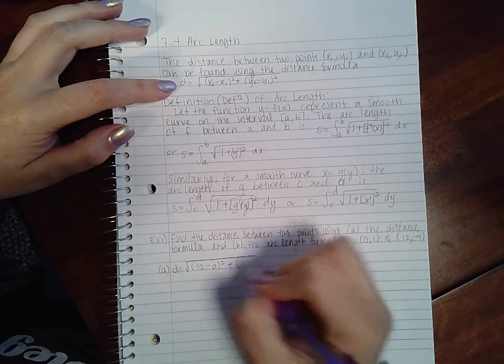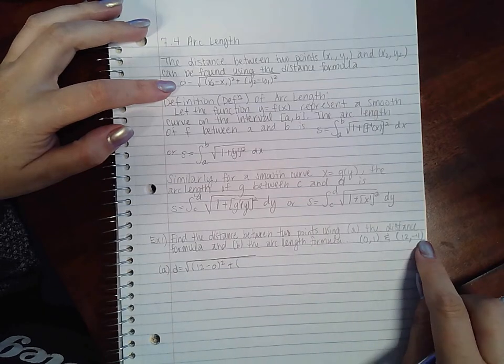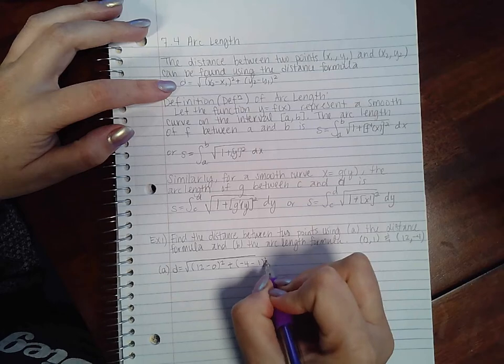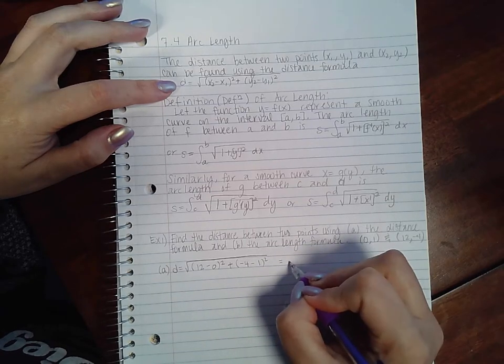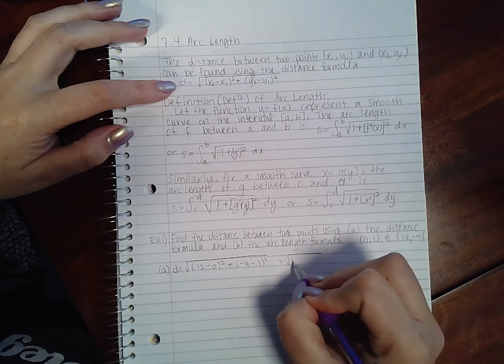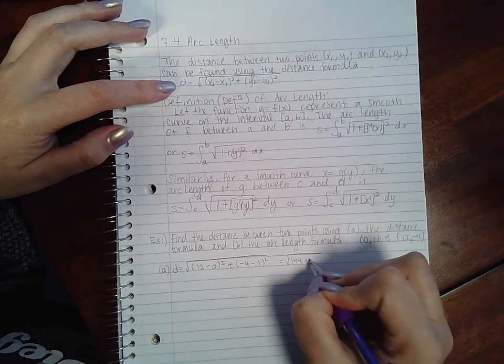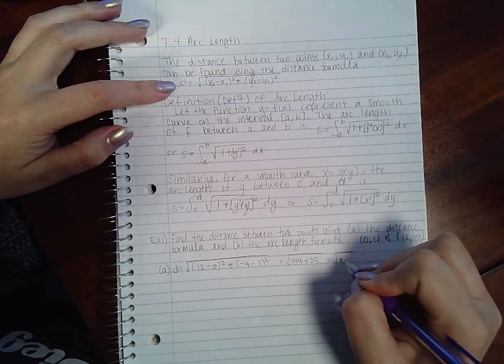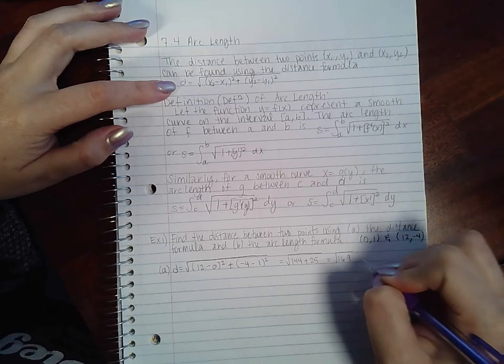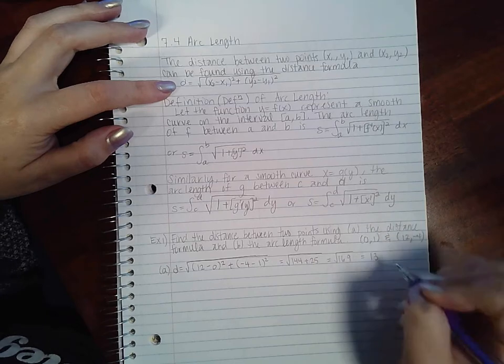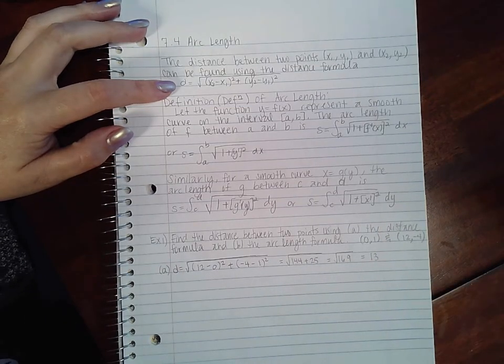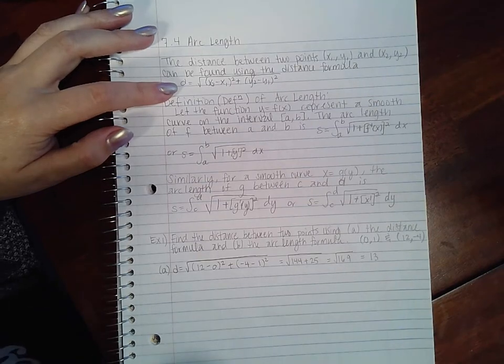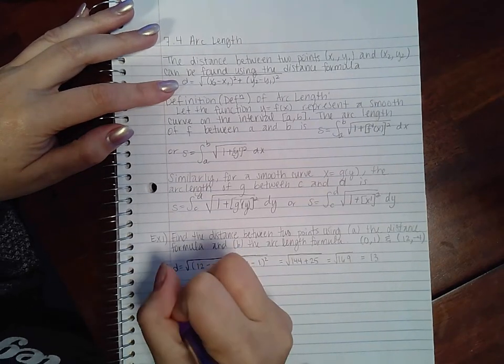Since I put this x value first, I have to also put this y value first. Then I get the square root of 144 plus 25, which is the square root of 169, which is 13. So they are 13 units length away from each other.